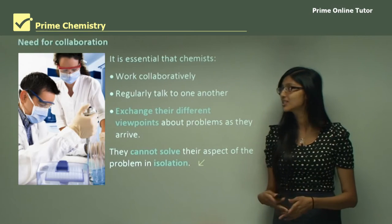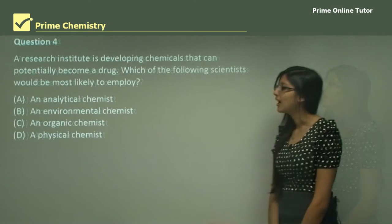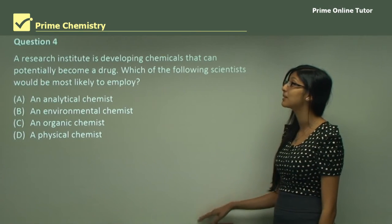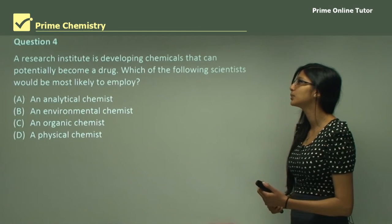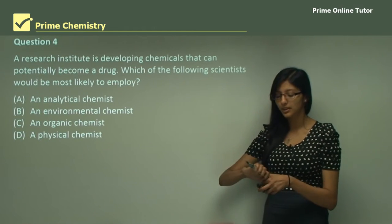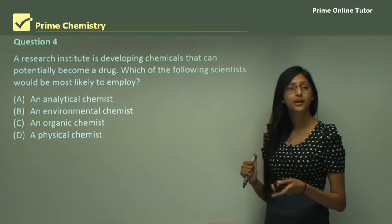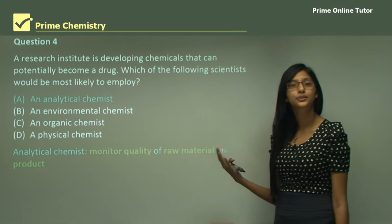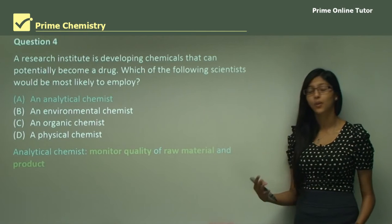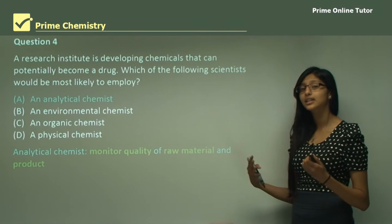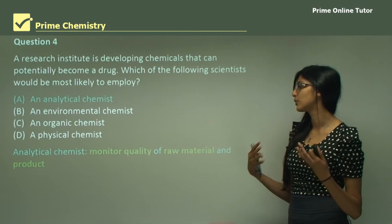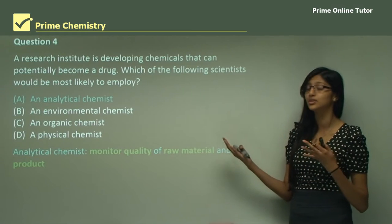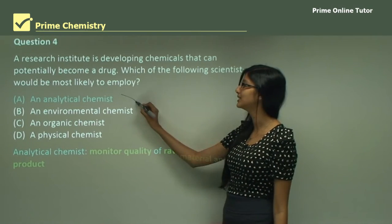Question 4 asks: a research institute is developing chemicals that can potentially become a drug — which scientist would they most likely employ? An analytical chemist monitors the quality of raw materials and products, checking for impurities, but cannot give direct information about what reactants to use to make a drug — so analytical chemist is not the answer.